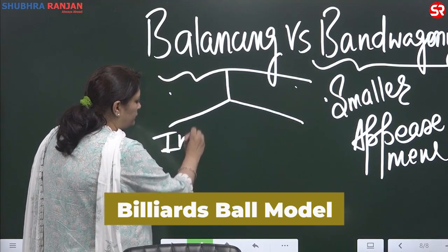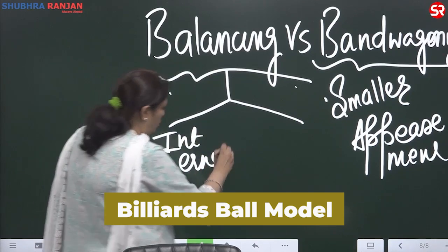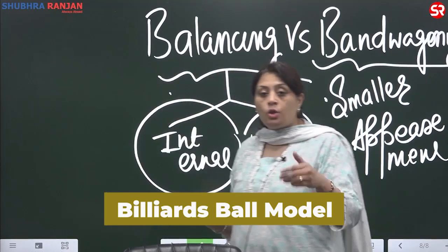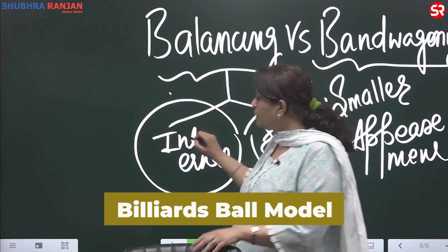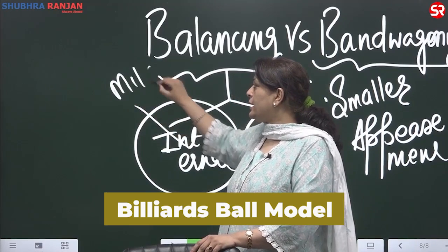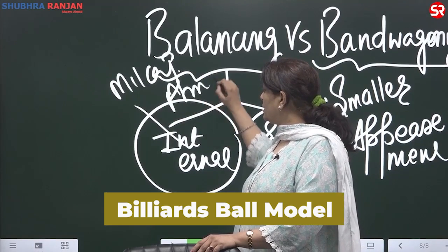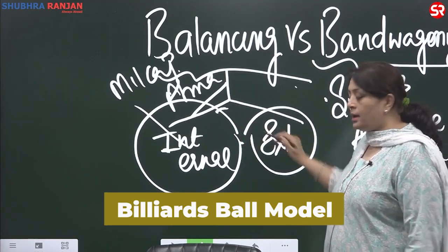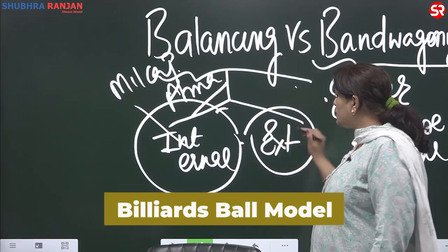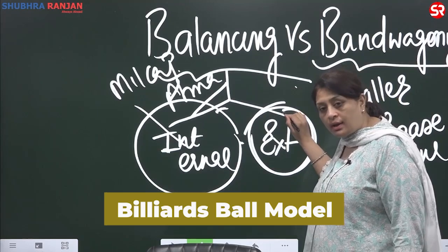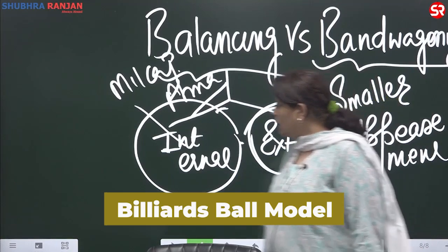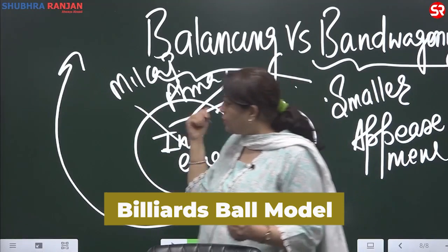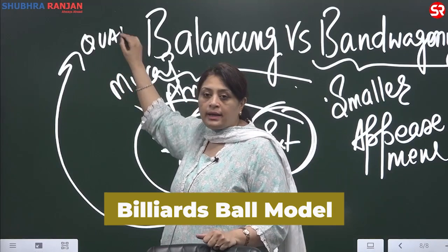There are two ways you can do balancing. The first is internal — you increase your own power, your own military capability, self-reliance (atma nirbhar). The second is external — to create psychological pressure, you join hands with countries having identical interests, such as alliances or Quad.